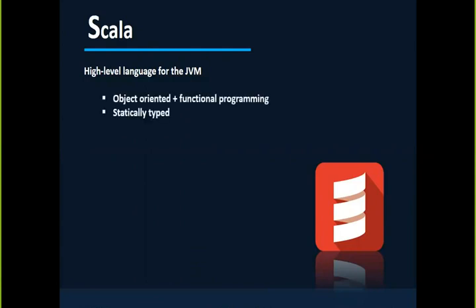Scala is mainly object-oriented plus functional programming, and it is a statically typed programming language — unlike Python, which supports dynamically typed features. Statically typed means that if you declare any variables or methods, the return types or variable data types are decided at the time of compilation itself, not at runtime.